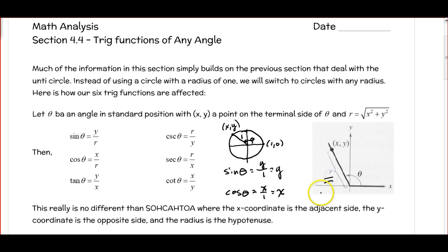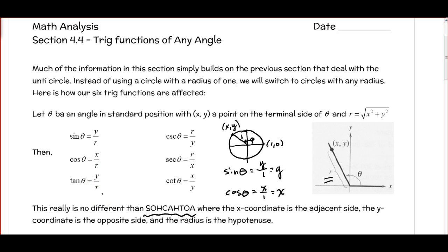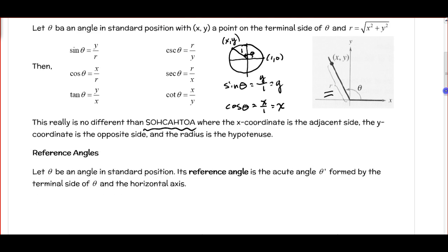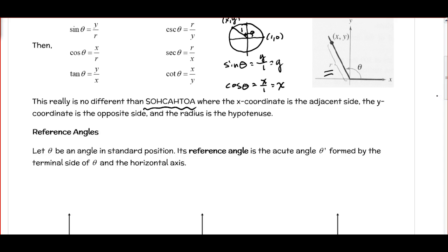But now when we change it so we don't have a radius of 1, we're just going back to SOHCAHTOA. The sine is the opposite over the hypotenuse, which is y over r, just using different notation. Cosine would be x over r, adjacent over hypotenuse. And the tangent would be the sine over the cosine, or the opposite over the adjacent. And then we've got our reciprocal functions. The key here is just making sure that you sketch your triangle in the appropriate place and work it out using SOHCAHTOA.